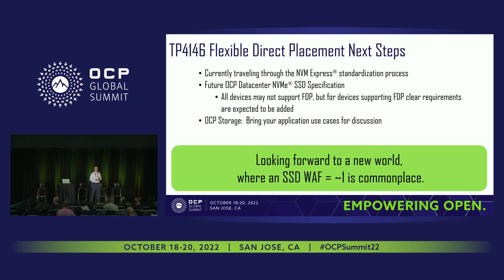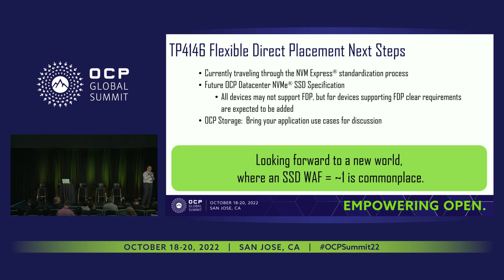Q&A: When you allocate the group, do you carve out a certain section of LBAs within the SSD and apply that to the namespace and the group to get those writes to go in there? No. When a write comes in with an LBA, the write still has the LBA where it's going to be written, and there is a new directive in the write command that says where to place it. The namespace can be written to any reclaim group in the endurance group. A host could say write all of this namespace to just one reclaim group, or go across all of them to distribute endurance across that namespace — but it's always under host control.